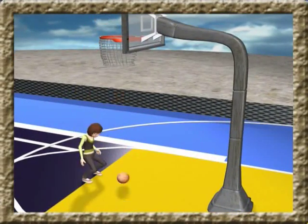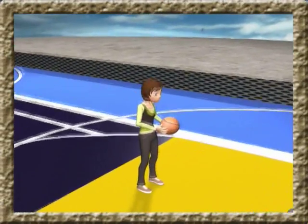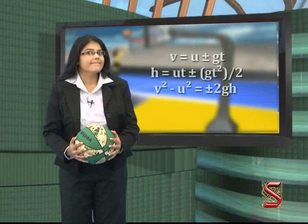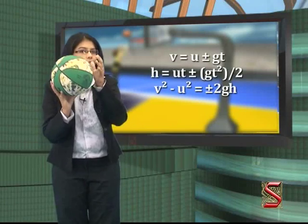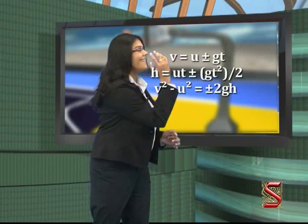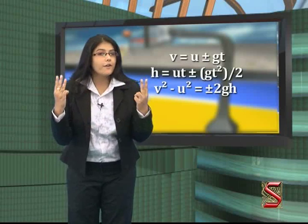Look how she threw the ball into the basket. So how do we calculate the velocity of this ball? We use the equations of motion. There are three of them.